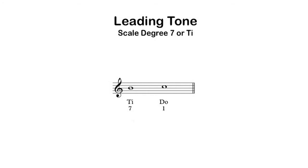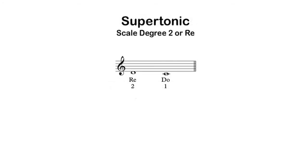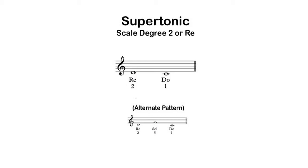On the other side of tonic is the supertonic, or scale degree 2. That scale degree wants to step down to scale degree 1. Scale degree 2 has an alternate pattern, which is oftentimes easier to hear for people who play bass instruments or people who play a lot of jazz music. That is, following the circle of fifths: two, five, one — makes a lot of sense to people who are very harmonically oriented. Using syllables: re, sol, do.